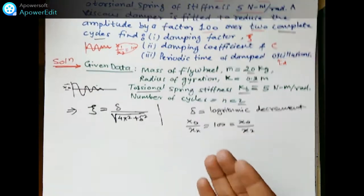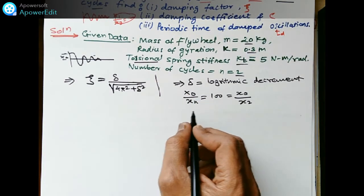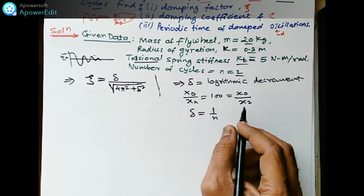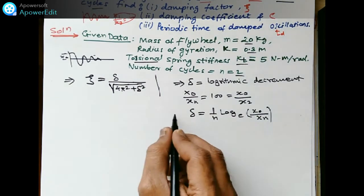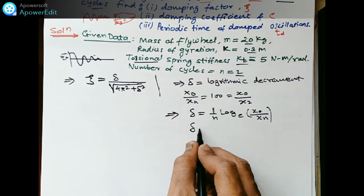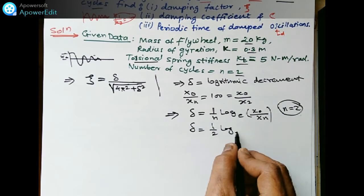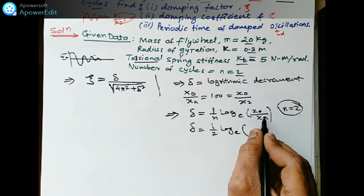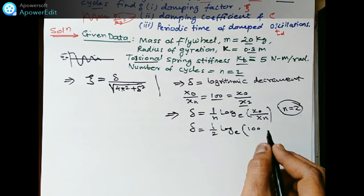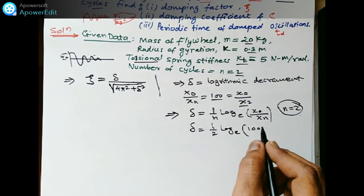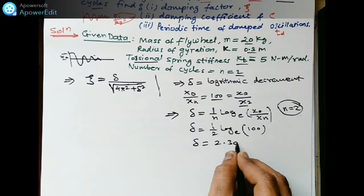The formula for logarithmic decrement is δ = (1/n) · ln(x₀/xₙ). Here n = 2 and x₀/x₂ = 100. Substituting: δ = (1/2) · ln(100) = 2.305.